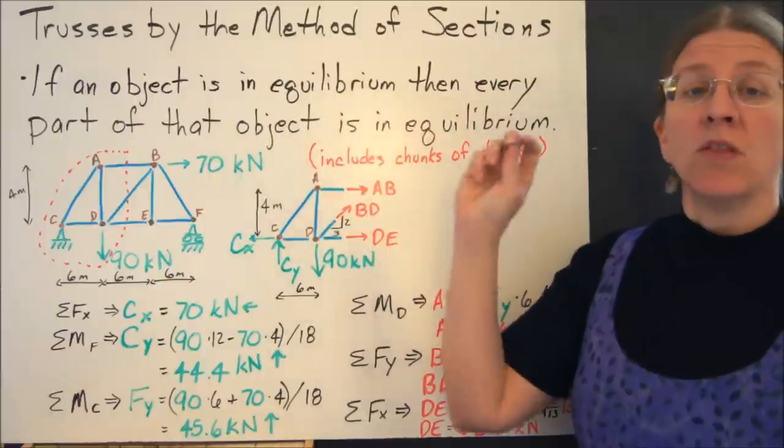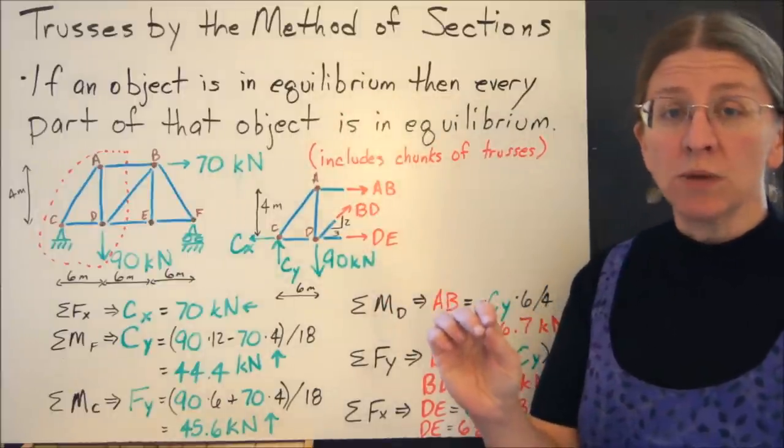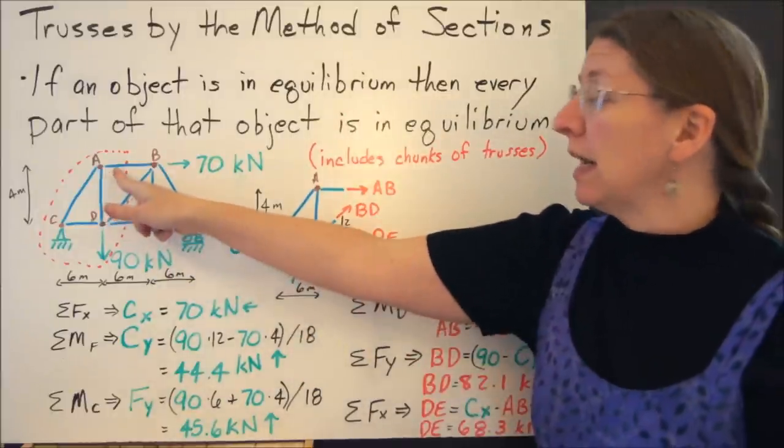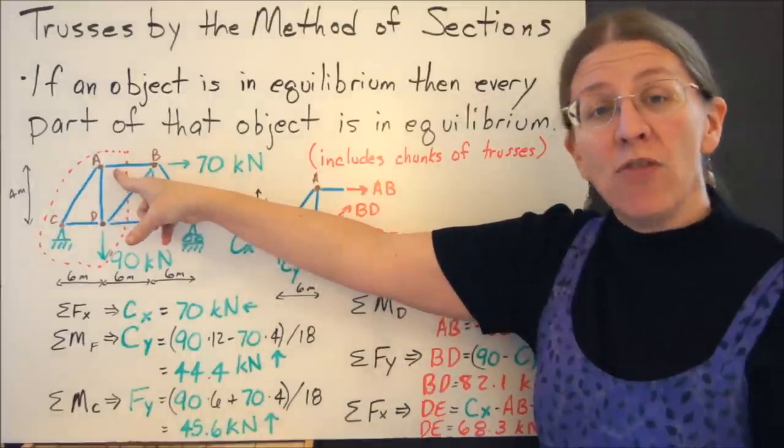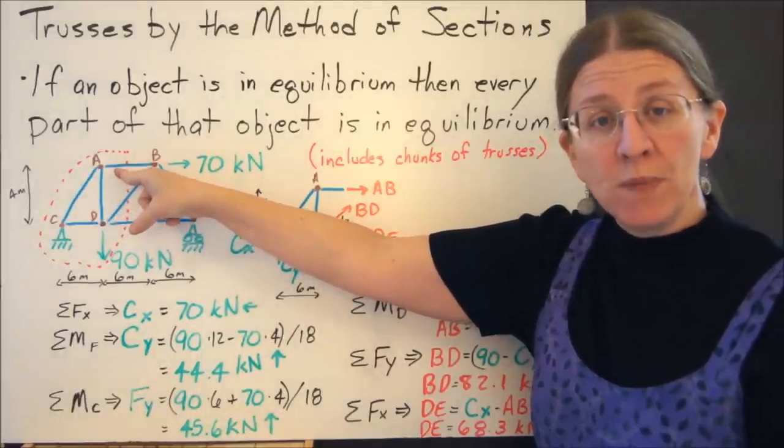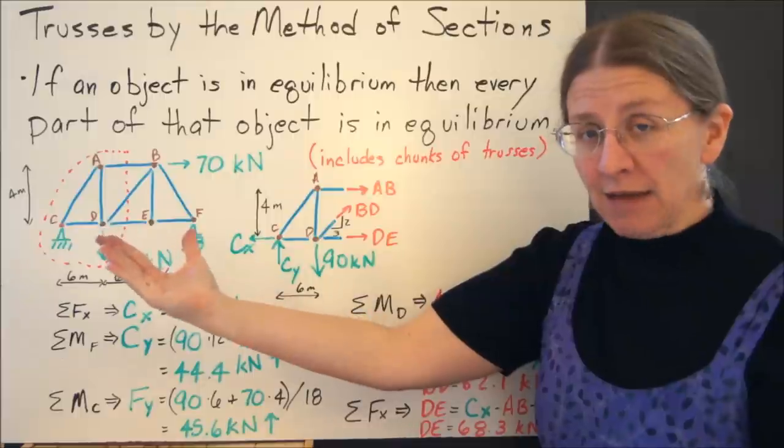If an object is in equilibrium, then any part of that object is in equilibrium. Before, we looked at an individual truss joint and said that joint must be in equilibrium, but we don't need to be limited to that.